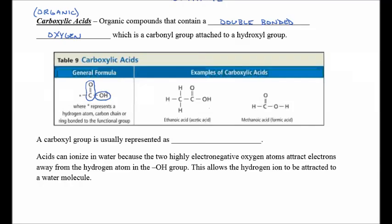A carboxyl group is usually represented as dash COOH. But that COOH is a double-bonded O and an OH attached to a carbon. When an acid ionizes in water, the H of the carboxyl group is allowed to be taken away and attaches to a water molecule, forming the hydronium ion.